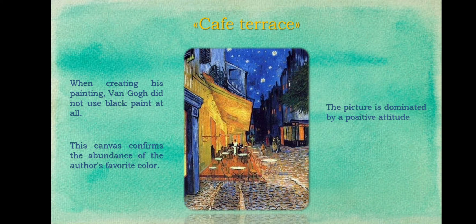When creating his painting, Van Gogh did not use black paint at all. He did not paint the night terrace in his studio as everyone usually did, but worked under the night sky.